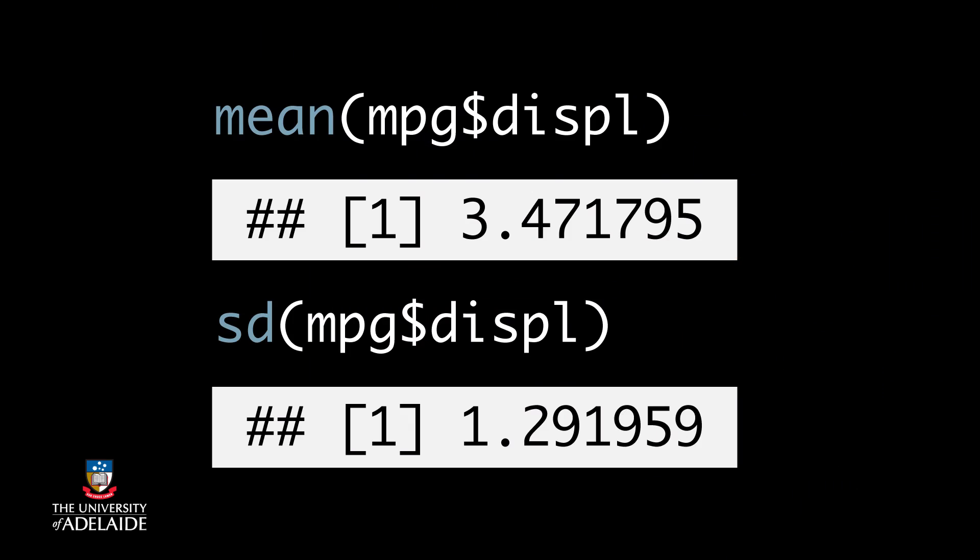For continuous variables, we can look at the mean and standard deviation. Picking on the displacement column from the MPG data set, take a wild guess at how you would calculate the mean and standard deviation. That's right — you use the mean command to compute the mean, and sd for the standard deviation. Here are the results.